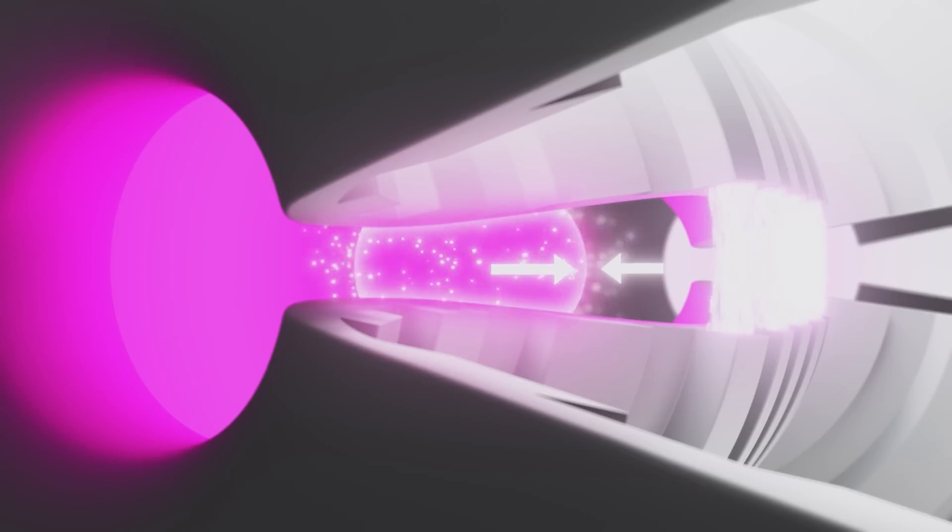As the plasma's magnetic field gets stronger, it pushes back on the magnetic field of the machine causing a change in the machine's magnetic flux.